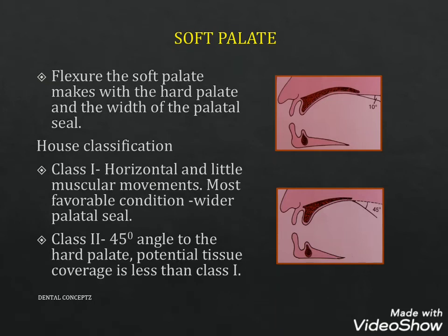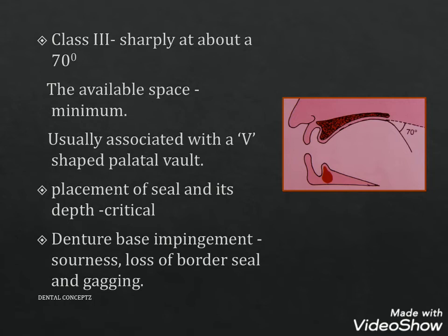For the soft palate, the flexure the soft palate makes with the hard palate and the width of the palatal seal should be recorded according to House. In Class 1, the soft palate is horizontal with little muscular movement — the most favorable condition resulting in a wider palatal seal. In Class 2, the soft palate makes an angle of 45 degrees to the hard palate with less potential tissue coverage. In Class 3, the soft palate makes a sharp angle of approximately 70 degrees with the hard palate, with minimum available space, usually associated with a V-shaped palatal vault. In these cases, placement of the seal and its depth is critical, and denture base impingement may result in soreness, loss of border seal and gagging.